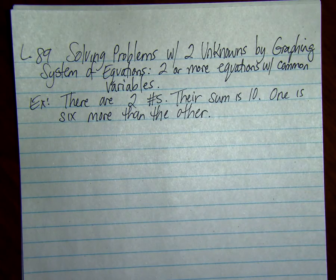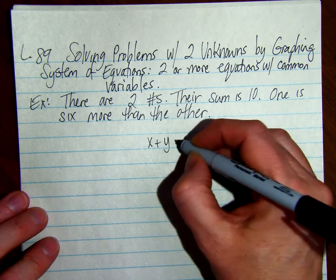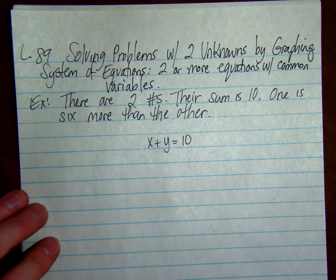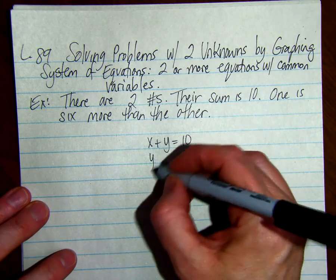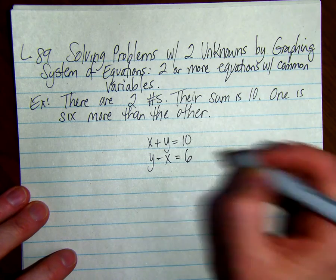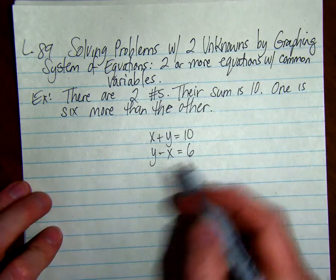We're going to call one number x and one number y. So we have x plus y equals ten. And if you take y and take away x, you get six. So one is six more than the other. I just chose that y was the bigger number.